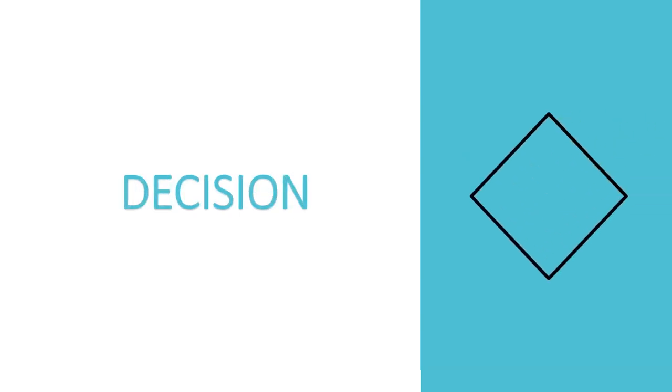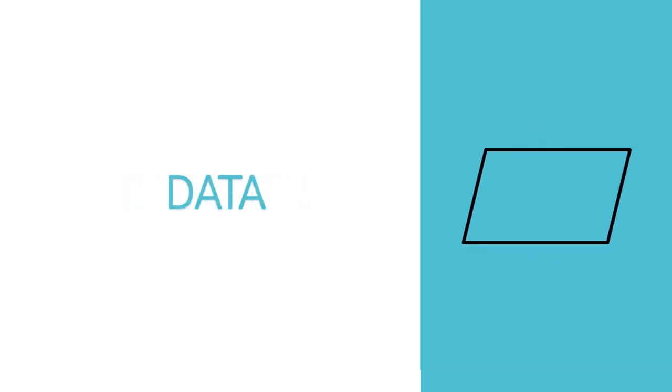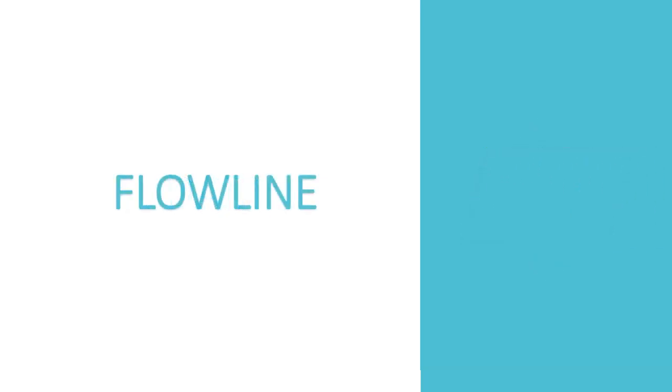Decision symbol: It is used to represent a decision to be made. Data symbol: It is used to represent input or output of data. Flowline symbol: It is used to represent the order of operation or workflow.